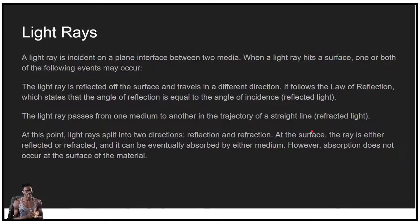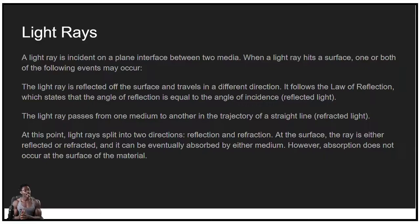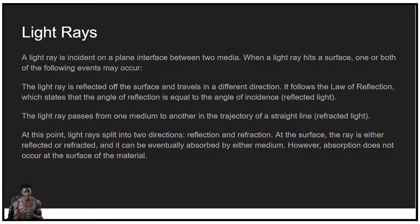A light ray is incident on a plane interface between two media. When a light ray hits a surface, one or both of the following events occur: the light ray is reflected off the surface following the law of reflection — the angle of reflection equals the angle of incidence — or the light ray passes from one medium to another. At this point, light rays split into two directions: reflection and refraction. At the surface, the ray is either reflected or refracted and can be eventually absorbed by either medium. However, absorption does not occur at the surface of the material.